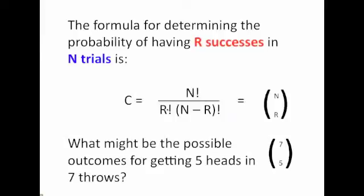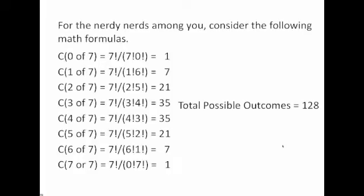What might the possible outcomes be for getting five heads in seven throws? Notice this symbology here. This is another way of saying the same thing: having r successes in n trials, having five successes in seven trials.